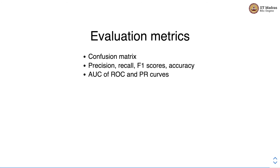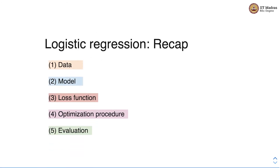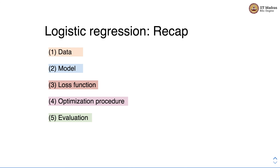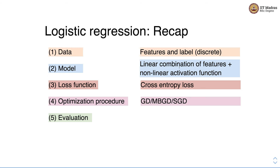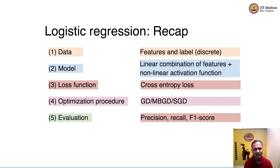Let us quickly recap logistic regression and its five components. We use features and labels, where labels are discrete members of some discrete set. The model is a linear combination of features with a non-linear activation function. We use cross entropy loss, which can be regularized with L1 and L2 regularization. We can use gradient descent, mini-batch gradient descent, or stochastic gradient descent as optimization procedures, and we evaluate logistic regression with precision, recall, and F1 score. In the next video, we will implement logistic regression from scratch.